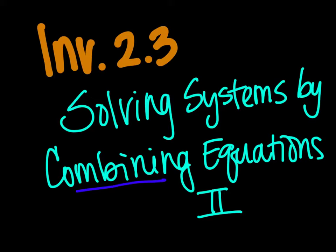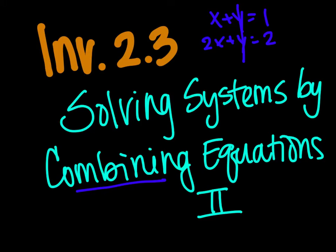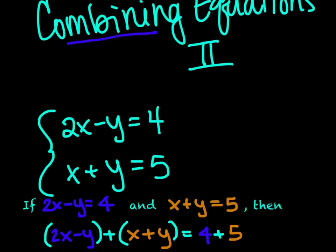Essentially we'd have an equation like x plus y is equal to 1, and 2x plus y is equal to 2, and then we would essentially subtract these equations so that our y's disappear and we just have x's that we have to deal with, and so on. So we're going to be playing around with that sort of idea. Let's get started.